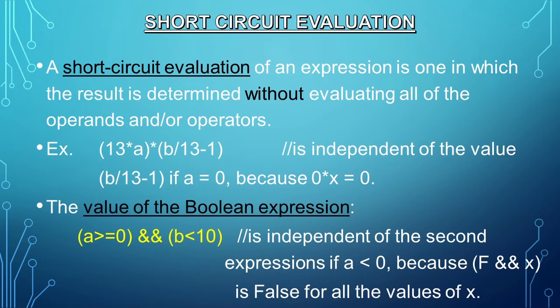Let us proceed to short-circuit evaluation. Short-circuit evaluation of an expression is one in which the result is determined without evaluating all of the operands or operators. For example, when A equals zero, there is no need to evaluate (B / 13 - 1) or perform the second multiplication—however, this shortcut is not easily detected during execution. The value of the Boolean expression is independent of the second expression if A is less than zero, because false AND X is false for all values of X. So when A is less than zero, there is no need to evaluate B, the constant N, the second relational expression, or the logical AND operation. Short-circuit evaluation exposes the potential problem of side effects in expressions.